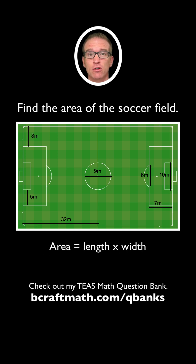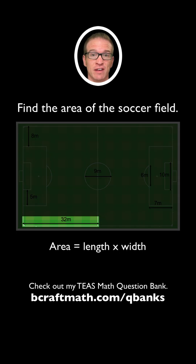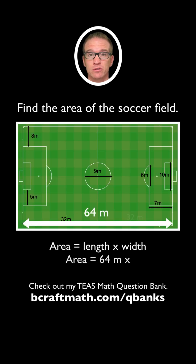We can find the length across the bottom. Since that 32 meters is the left side of the field, we can apply the 32 meters to the right side for a total of 64 meters. That is our length.